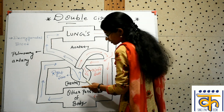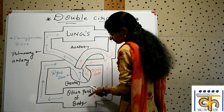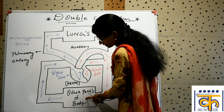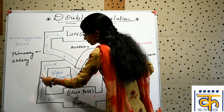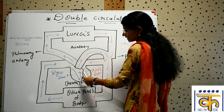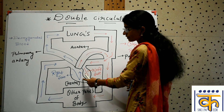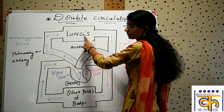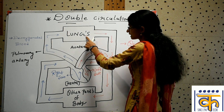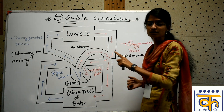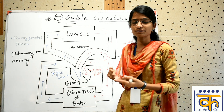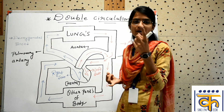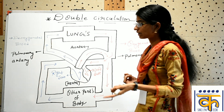Now let us study in detail about the flow. Once the deoxygenated blood, that is carbon dioxide rich blood, is collected from all the other body parts, it reaches the right side of the heart. From there it goes via pulmonary artery to the lungs, where gaseous exchange occurs — oxygen enters the blood whereas carbon dioxide is removed.